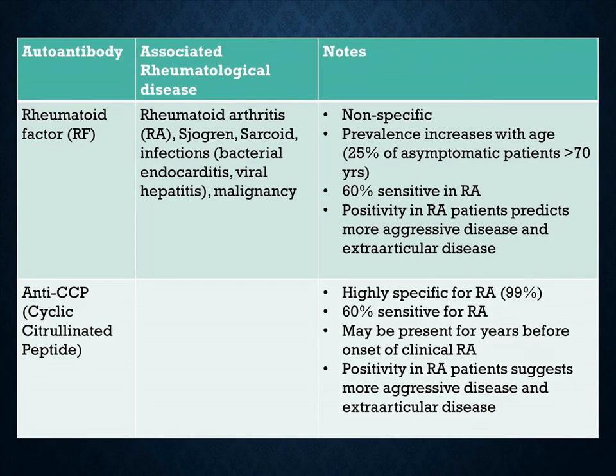Rheumatoid factor is found in rheumatoid arthritis, Sjogren's syndrome, sarcoid, and even infections and malignancies. They are non-specific and prevalence increases with age. It is 60% sensitive in RA, and positivity in RA predicts more aggressive disease and extra-articular disease. Anti-CCP is highly specific for rheumatoid arthritis. It is 60% sensitive for RA, may be present for years before onset of clinical RA, and positivity suggests more aggressive and extra-articular disease.